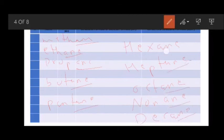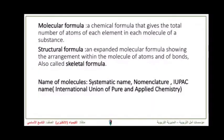Each one ends in -ane, belonging to the alkane family. Now what do we mean by the molecular formula? The molecular formula is a chemical formula that gives the total number of atoms of each element in each molecule of a substance.